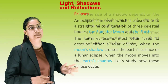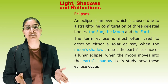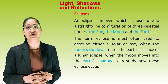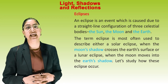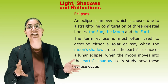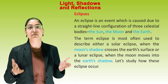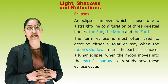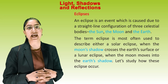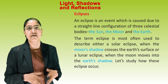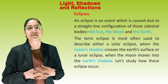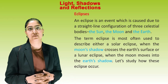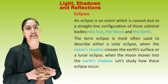Eclipse. An eclipse is an event caused due to a straight-line configuration of three celestial bodies: the sun, the moon, and the earth. The term eclipse is most often used to describe either a solar eclipse, when the moon's shadow crosses the earth's surface, or a lunar eclipse, when the moon moves into the earth's shadow.